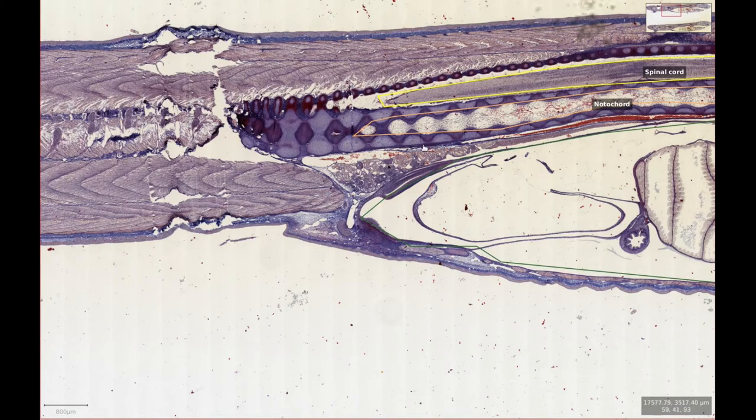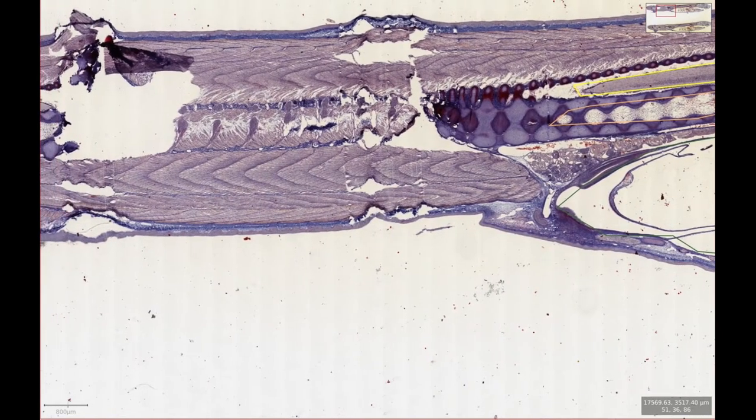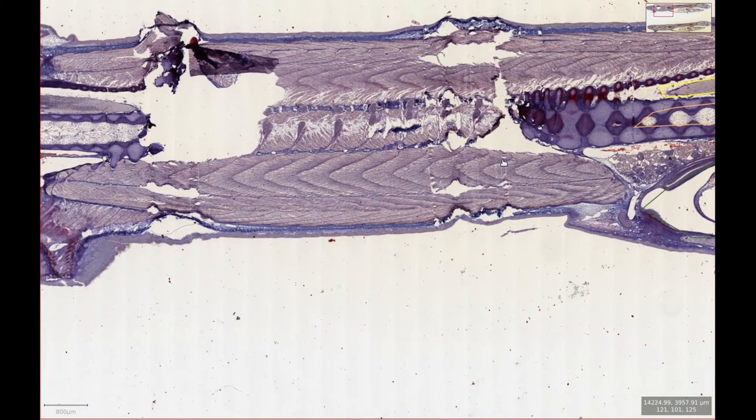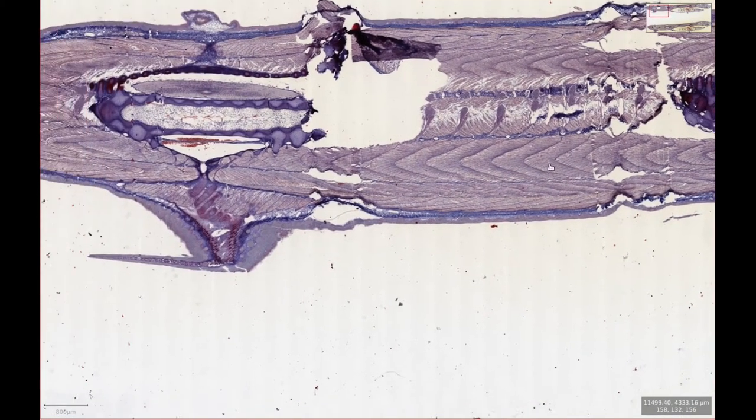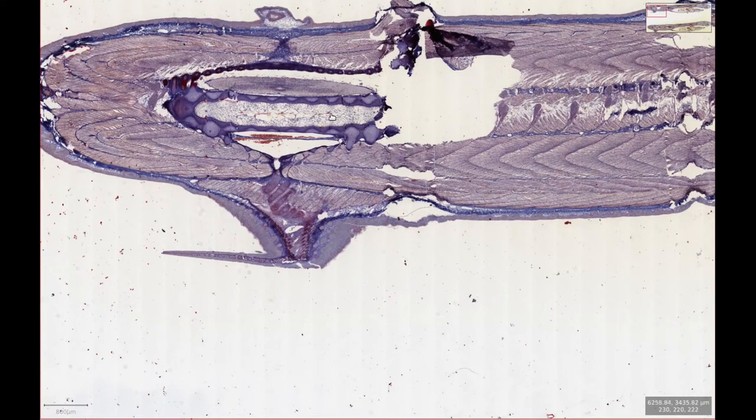Behind the coelomic cavity we have chevrons of striated muscle tissue forming the tail, with another small section of spinal cord enclosed by vertebra and with the notochord below.